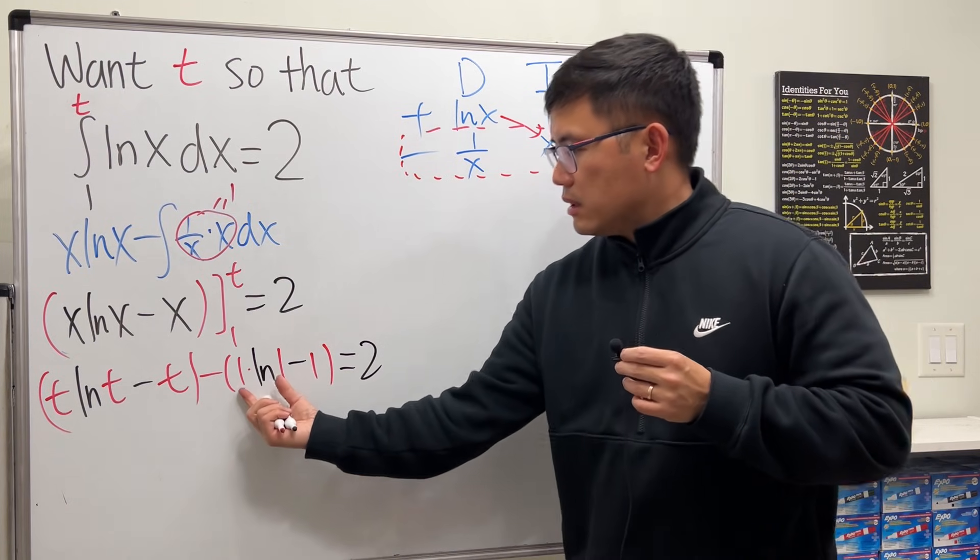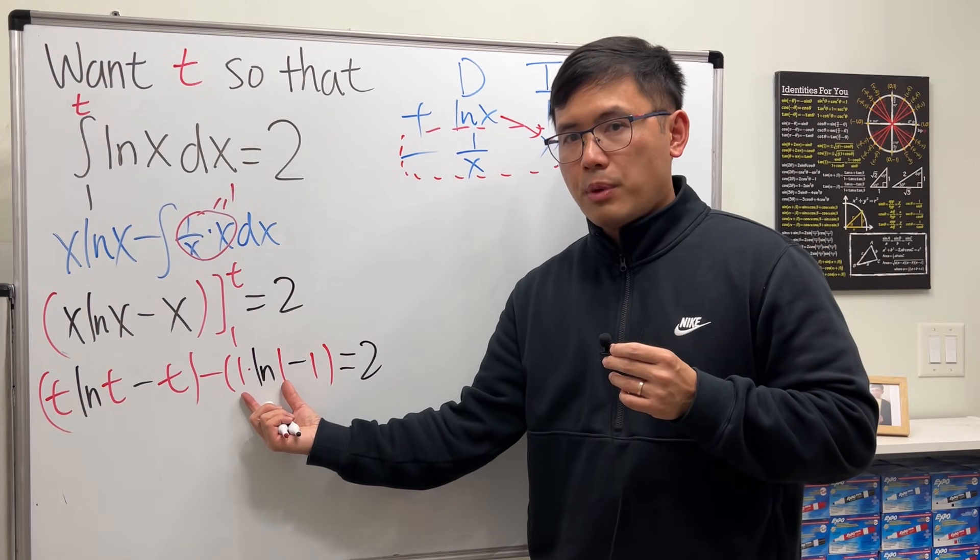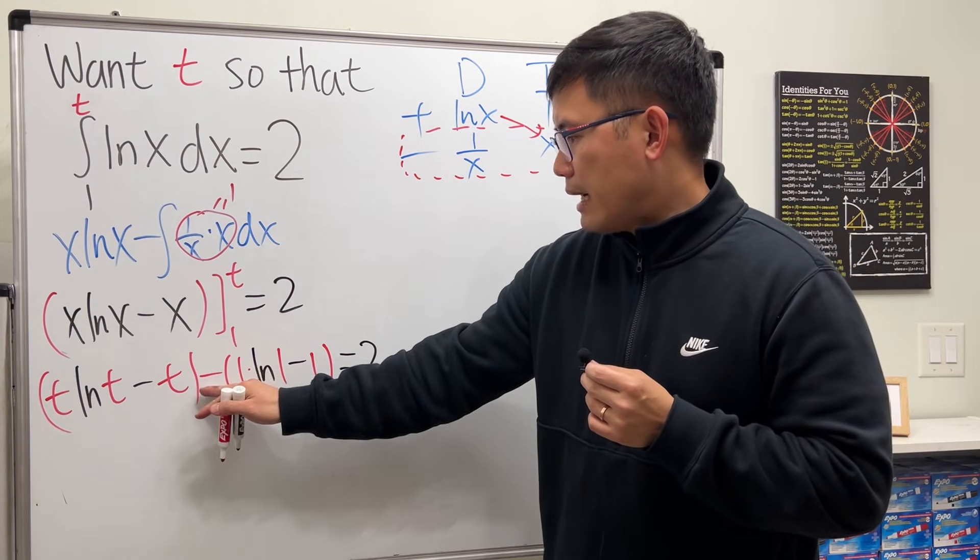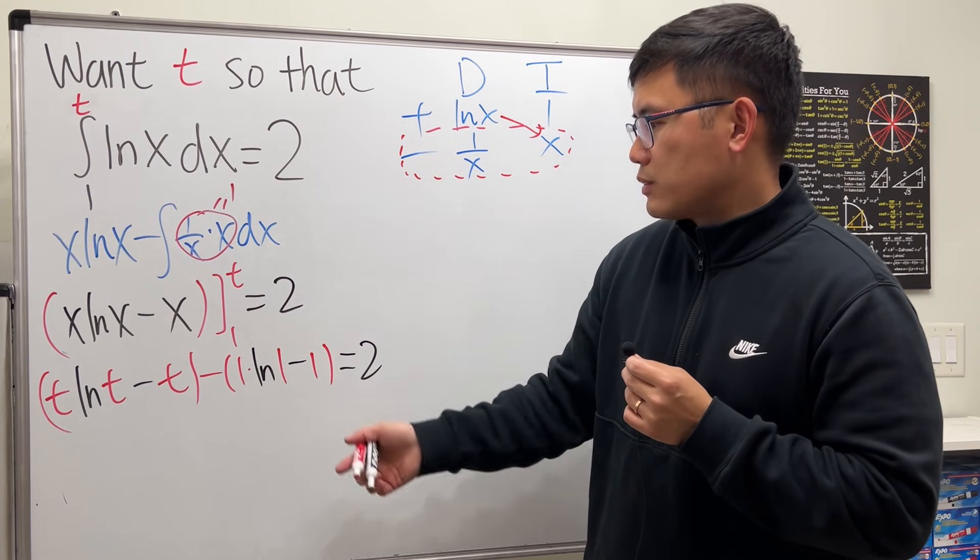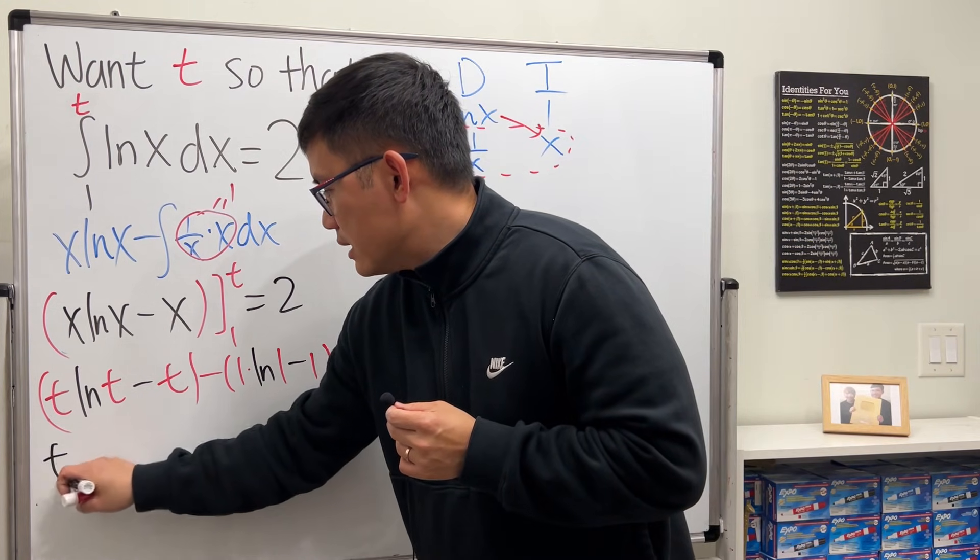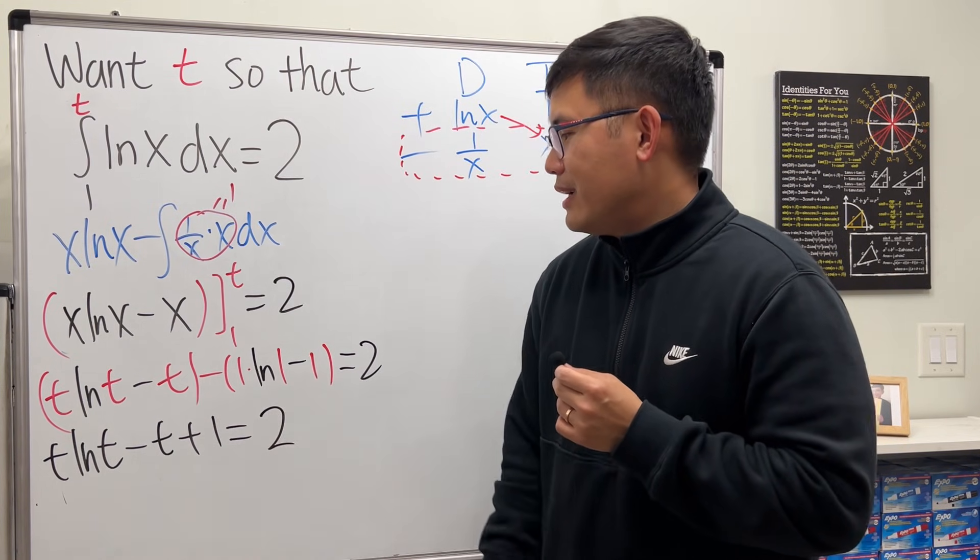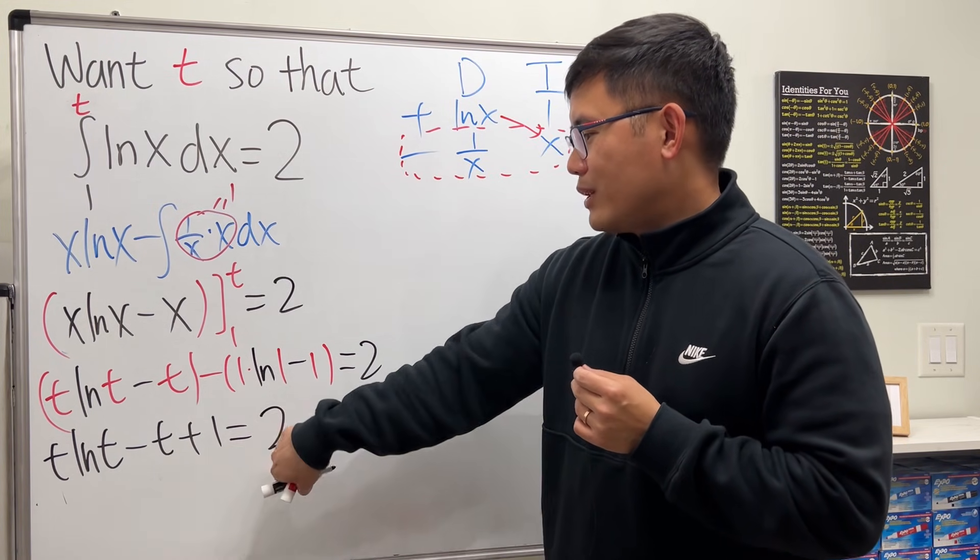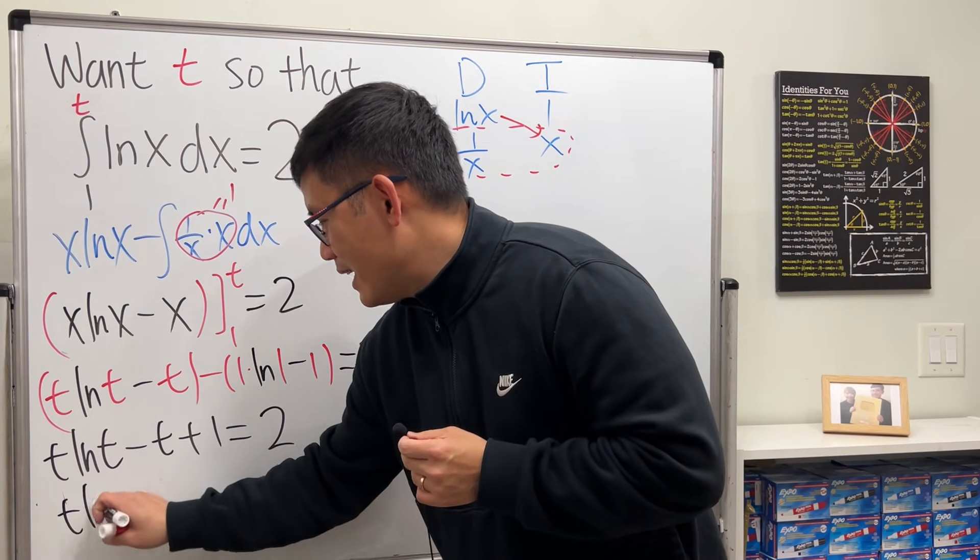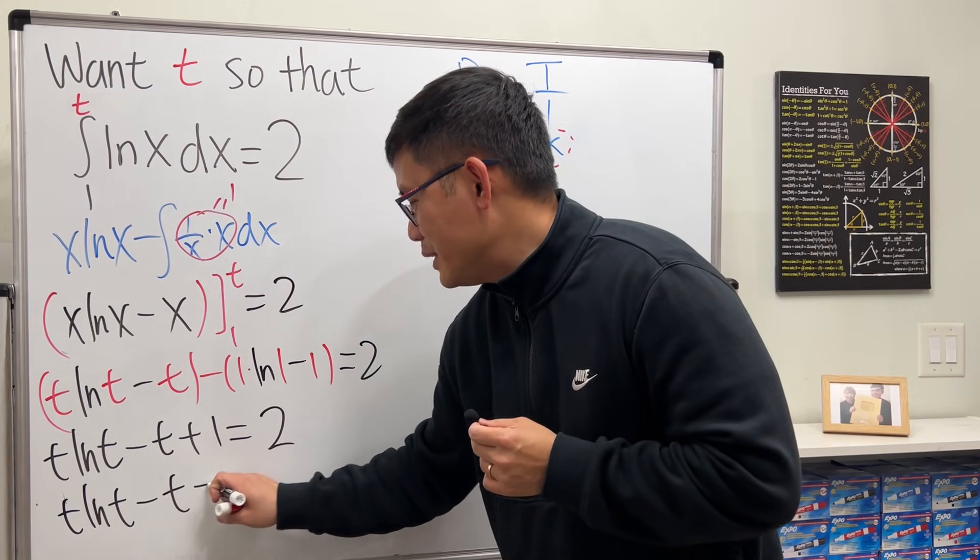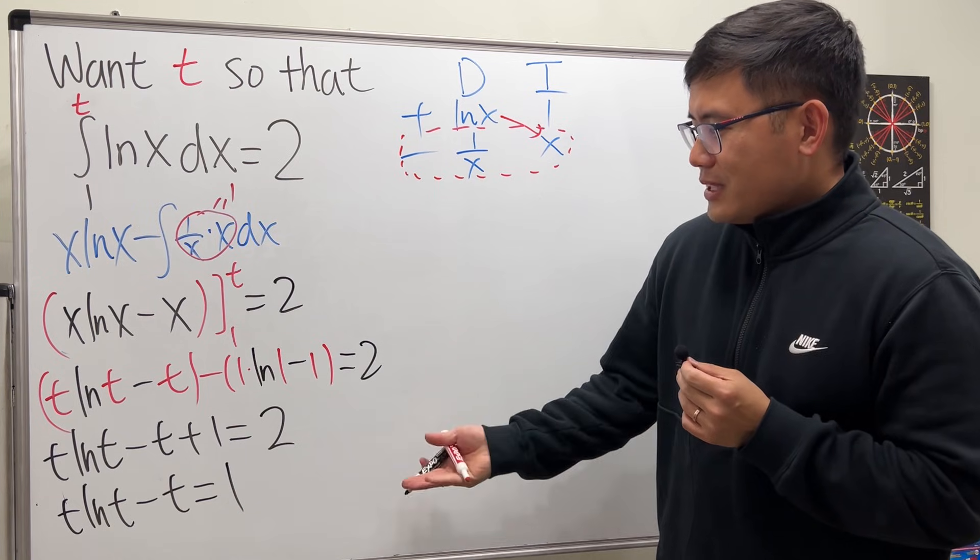Nice. Now this right here, ln(1) is 0, so this part is 0, and minus negative so it's just plus 1. So we get t ln(t) minus t plus 1 equals 2. Of course we can put the 1 to the other side and then we get t ln(t) minus t equals 1. That looks pretty nice.